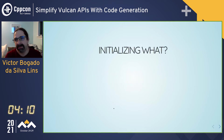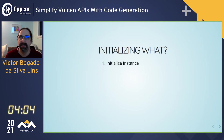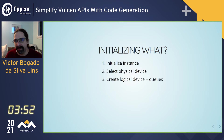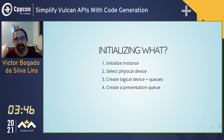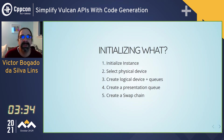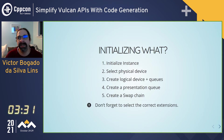So what is all this code initializing? It's initializing an instance, selecting a physical device, creating logical devices and queues, then creating a presentation queue — which apparently is something different — and then creating a swap chain. And that's where I stopped in my studies. One thing I should not forget: select the correct extensions, otherwise it doesn't work.